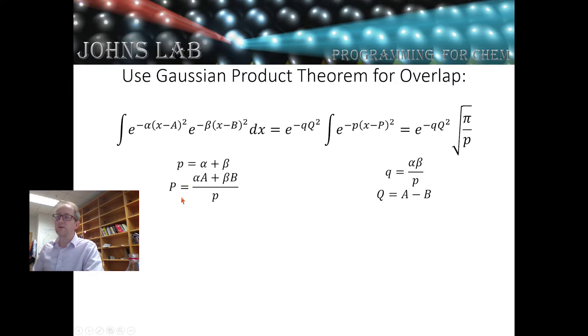The geometric mean will be its new location. So alpha times a plus beta times b over alpha plus beta gives the center of my new Gaussian function.